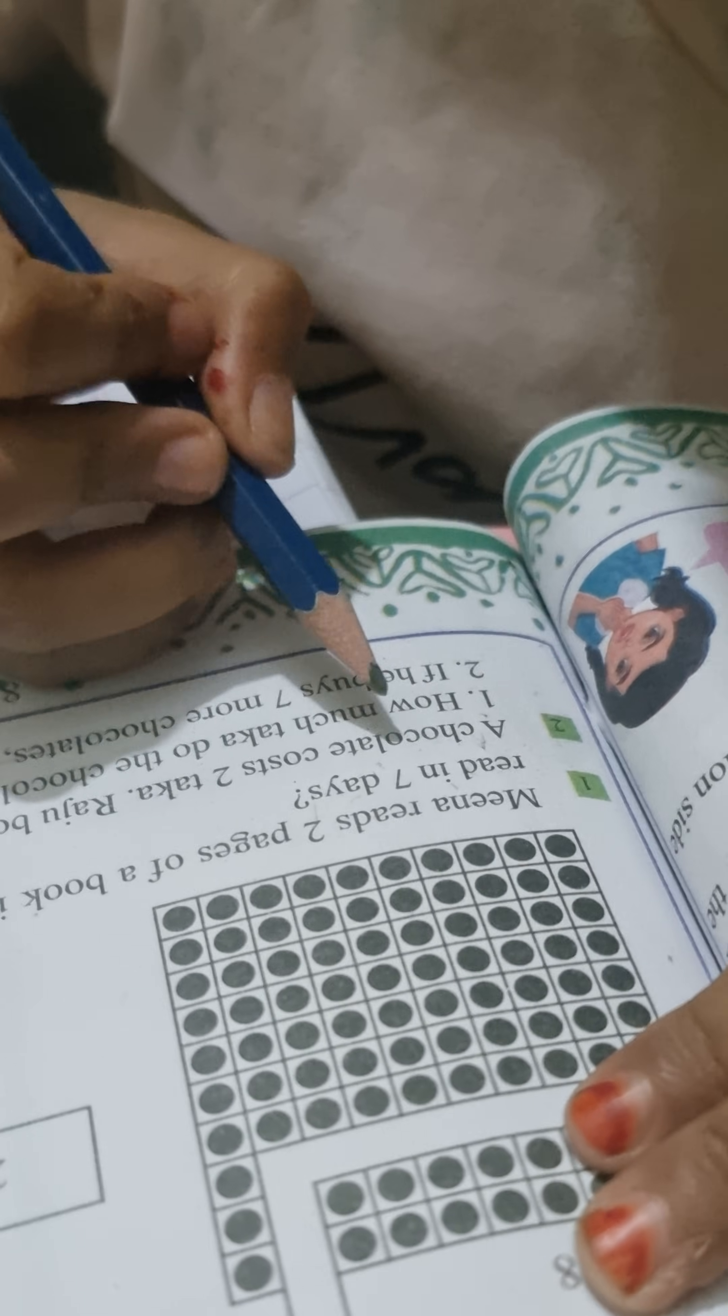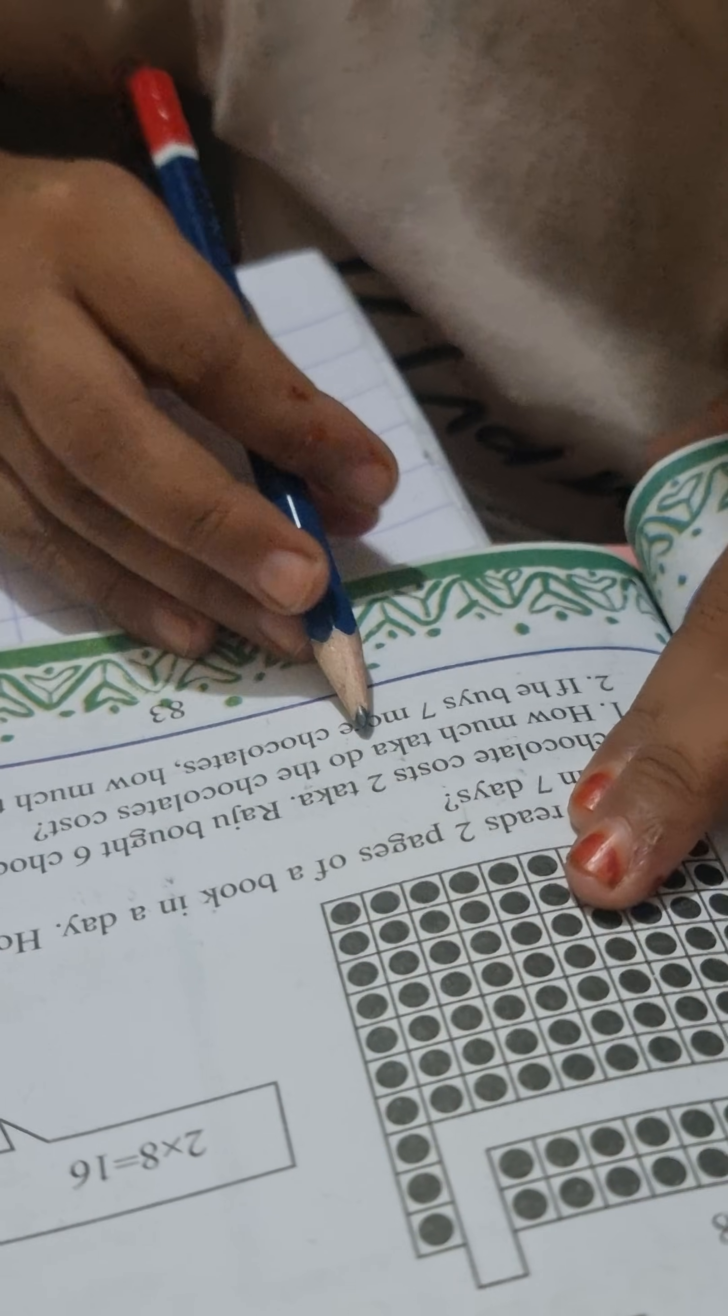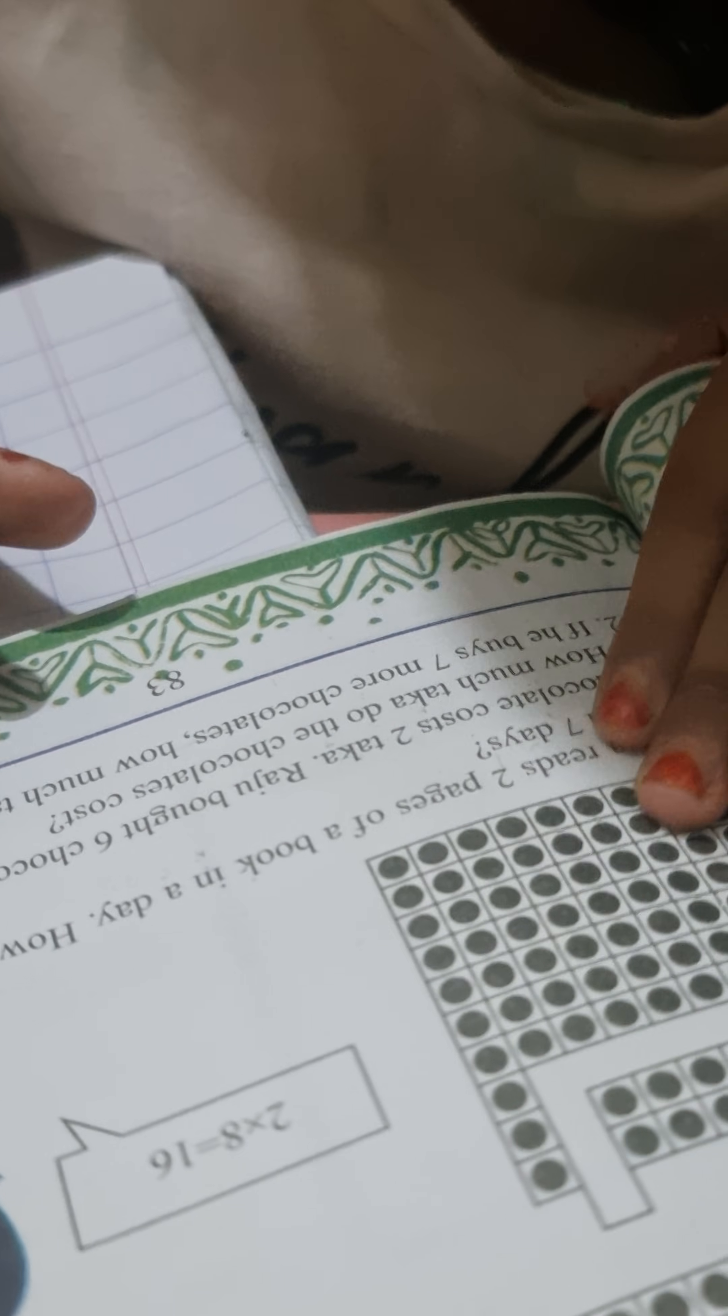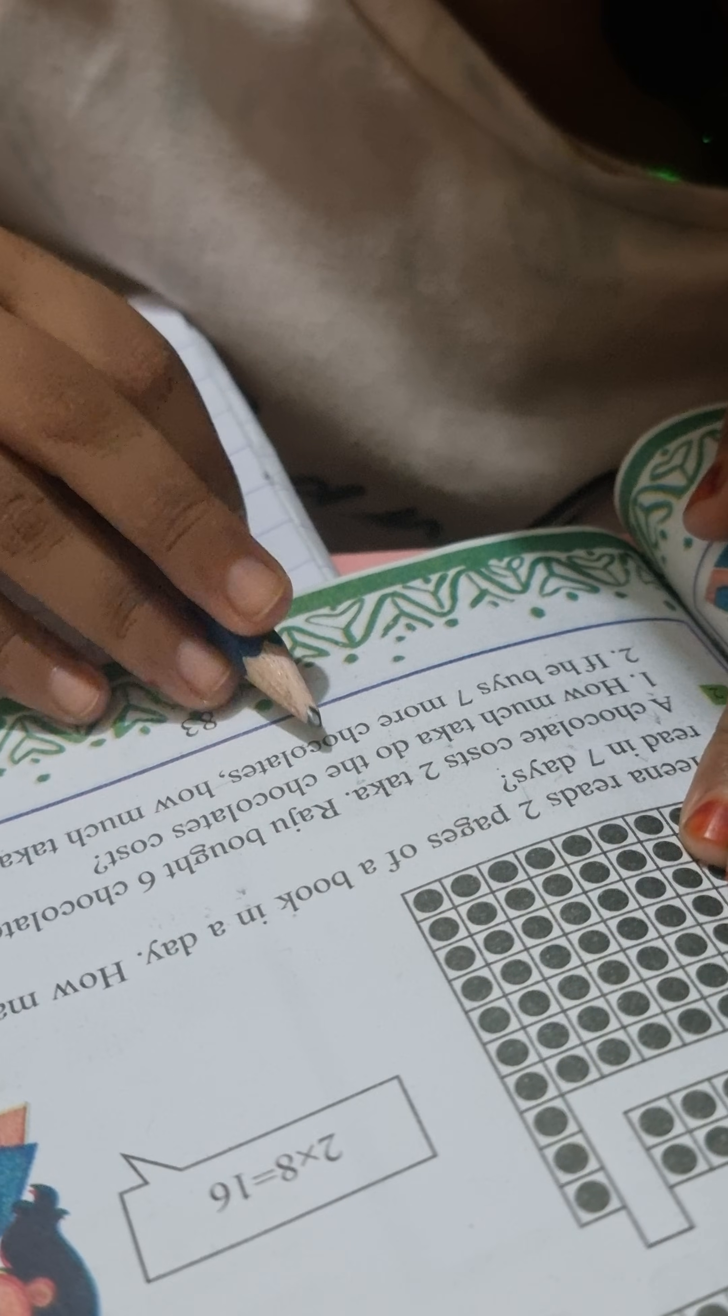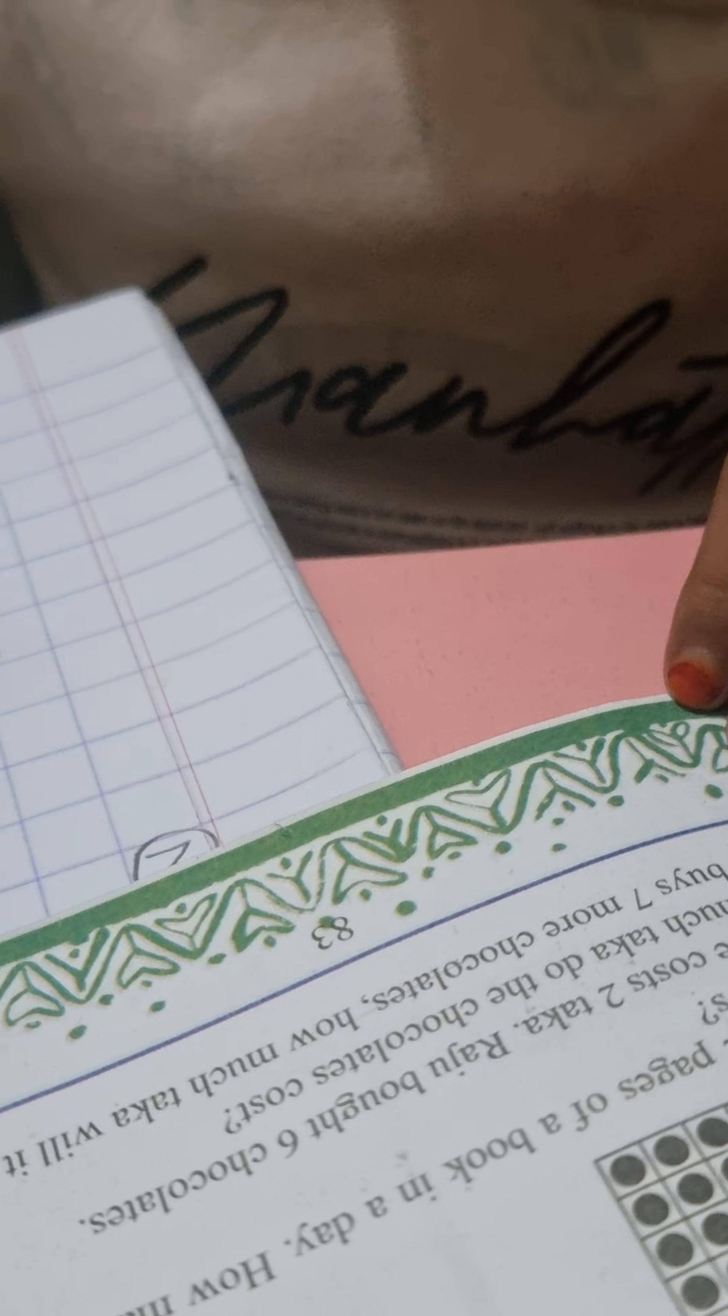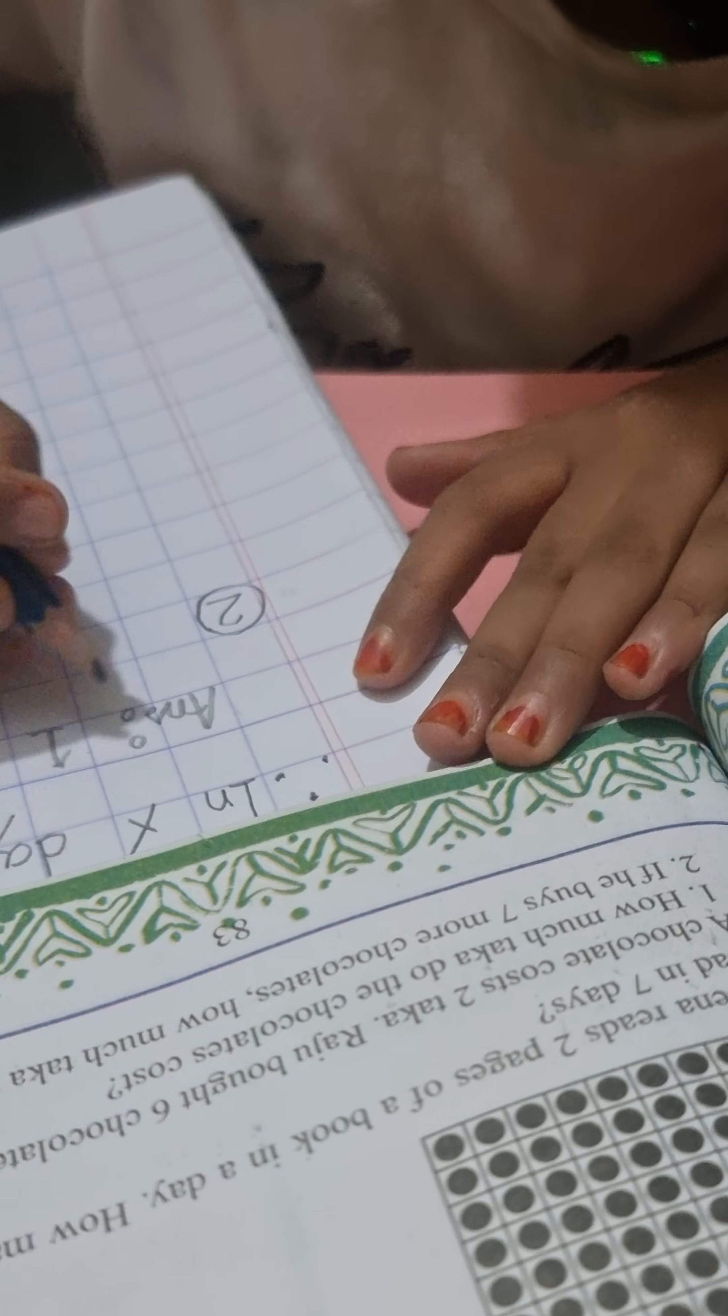A chocolate, means one chocolate costs 2 taka. One chocolate costs 2 taka. Raju bought 6 chocolates. How much taka do the chocolates cost? So let's write the answer.